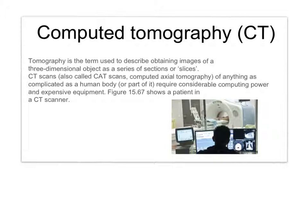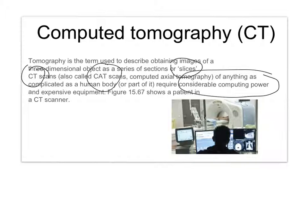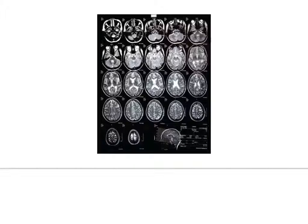Computed tomography — tomography is a term used to describe obtaining images of three-dimensional objects as a series of sections or slices. These give you a much more detailed image. Though they're still using x-rays, they're also called CT scans and CAT scans. They use expensive equipment and considerable computing power. This is an example of a CT scan for the brain — what you're seeing is lots of different x-rays processed together using very powerful computers to give a three-dimensional image.